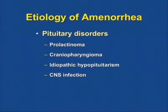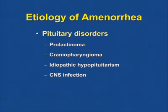Pituitary disorders causing amenorrhea include prolactinomas, which cause elevated prolactin and can cause galactorrhea. Craniopharyngiomas can encroach on the pituitary stalk and cause visual field defects. Idiopathic hypopituitarism results in failure to produce LH, FSH, ACTH, or TSH. A history of CNS infection such as meningitis during childhood can also affect the pituitary.